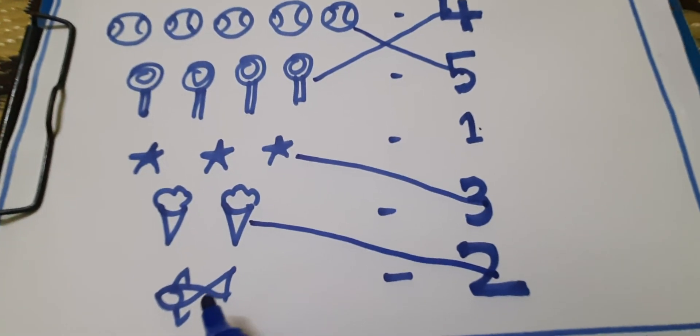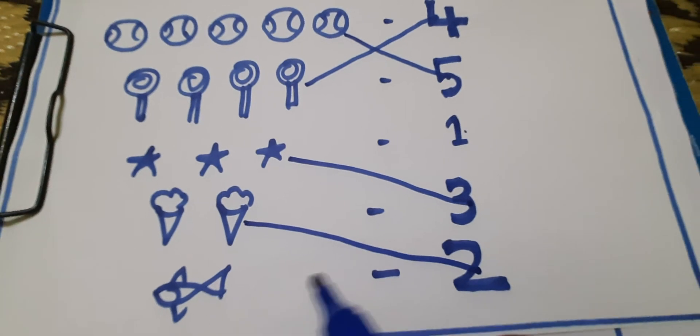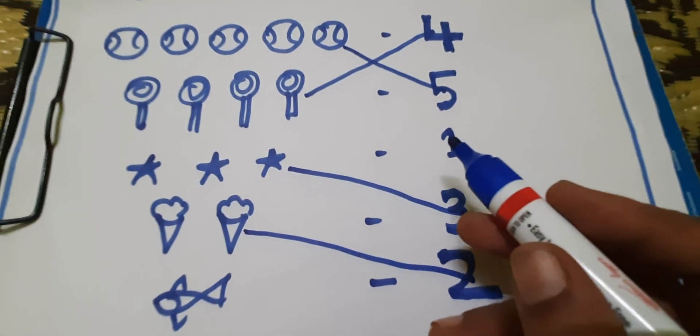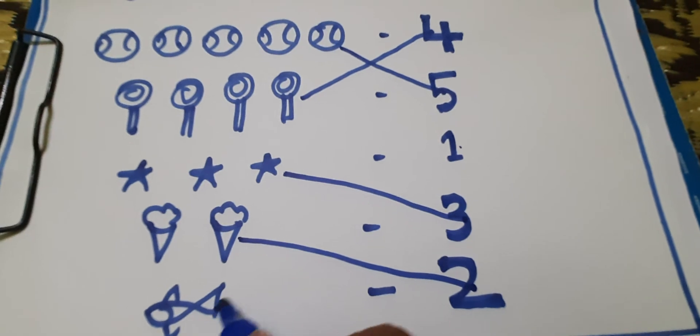Then, fish. How many fish here? 1. Where is 1 there? You search. Here. Match it. 1 fish. Number 1.